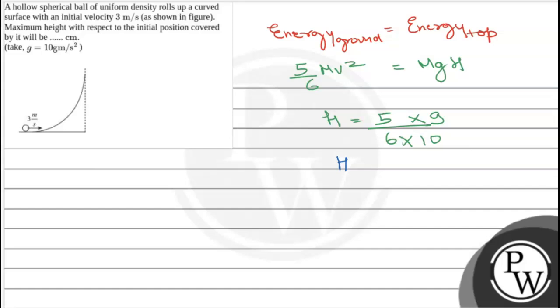So h comes out to be 0.75 meters, and since the question asks in centimeters, it will be 75 centimeters. So the final answer is maximum height is 75 centimeters.